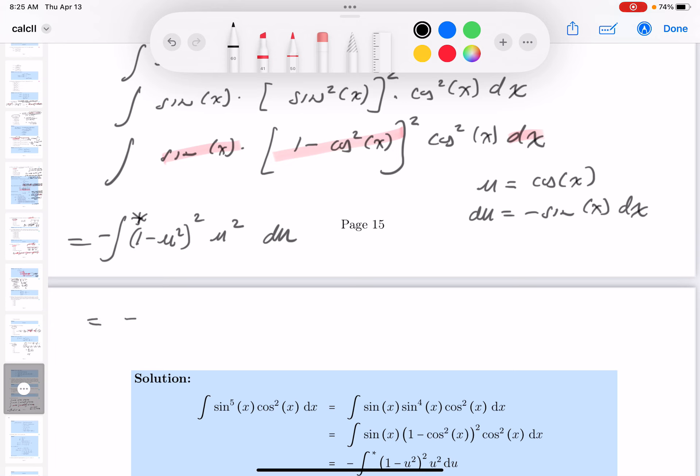Let's write this down carefully. That's going to be 1 minus 2u squared plus u4 times u squared du. All right, I'm going to multiply it out now. That's going to be u squared minus 2u to the 4th, sorry about that, plus u6 du.